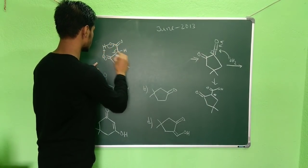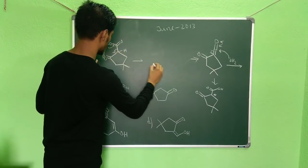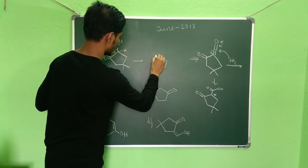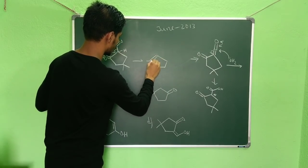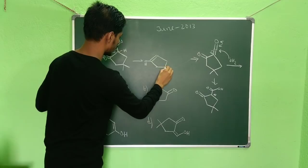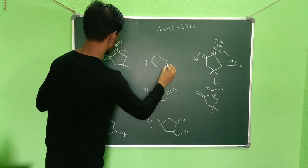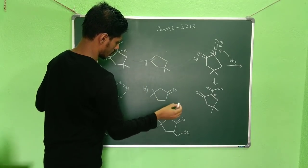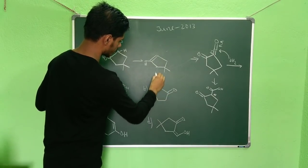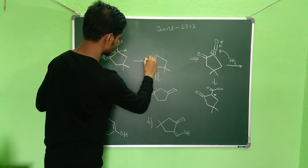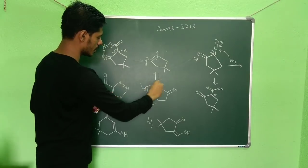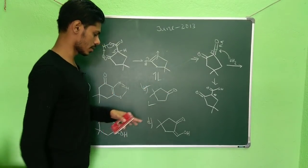This is how the decarboxylation happens: you will have the OH involved like this, and then when tautomerization takes place, you will get the final product. So option B is the correct answer.